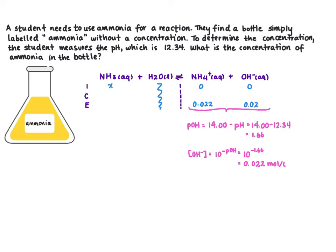That means that our change in concentration was positive 0.022 for these two values and negative 0.022 here giving us an equilibrium concentration of x minus 0.022.